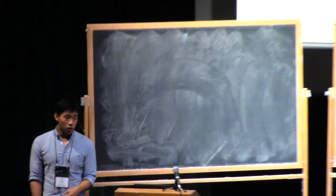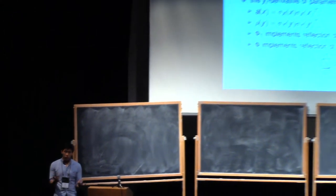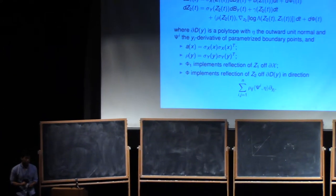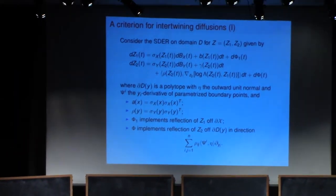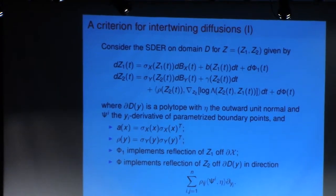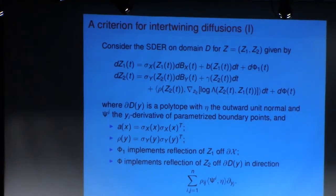Okay. So what we're going to do is give a general construction of a Z, which intertwines X and Y under certain conditions. So here's, it's going to be presented as a solution to a certain stochastic differential equation with reflection. So here's the equation.